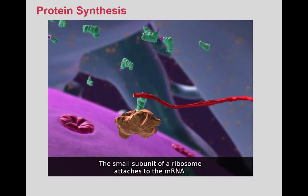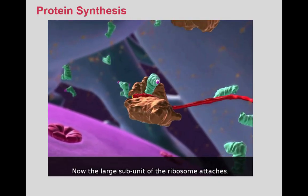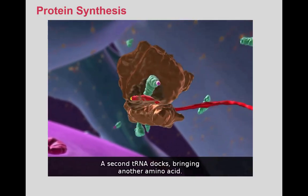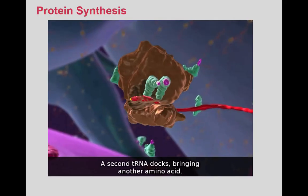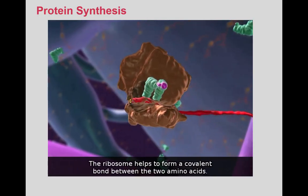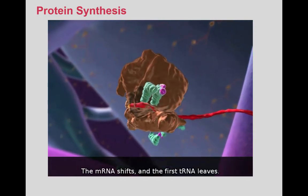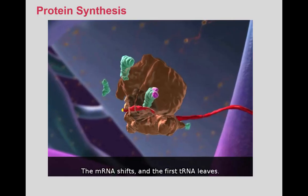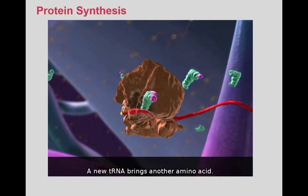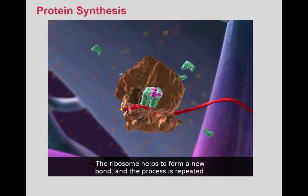The small subunit of a ribosome attaches to the mRNA. Now, the larger subunit of the ribosome attaches. A second tRNA docks, bringing another amino acid. The ribosome helps to form a covalent bond between the two amino acids. The mRNA shifts, and the first tRNA leaves. A new tRNA brings another amino acid. The ribosome helps to form a new bond, and the process is repeated.